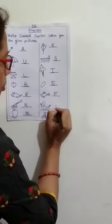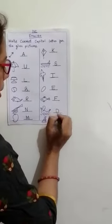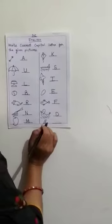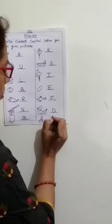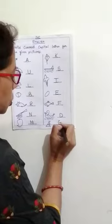This is duck. Write D, capital D. This is gun. Write capital G.